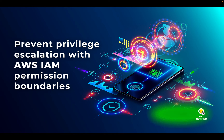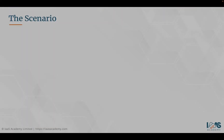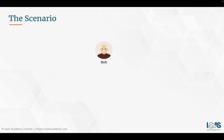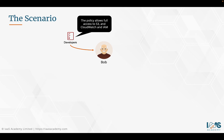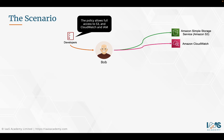Let's talk about this in a hands-on demonstration. Let's look at a scenario involving our friend Bob. Bob is a member of the developers group, which means he has access to certain resources and services. Specifically, a policy applied to the developers group gives him full access to Amazon S3, CloudWatch, and IAM. This means he has full access to Amazon S3 — he can create buckets, delete buckets, and so on. He can also access Amazon CloudWatch and the IAM identity and access management service.